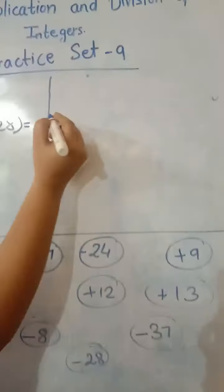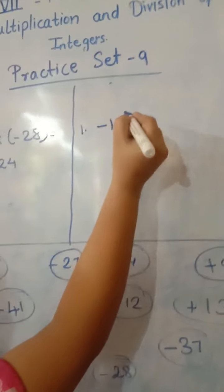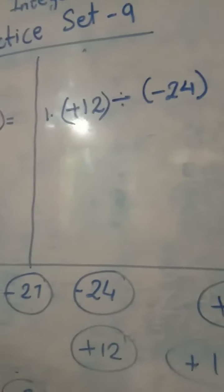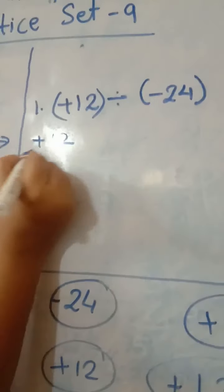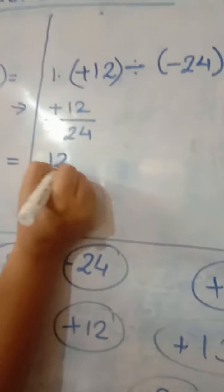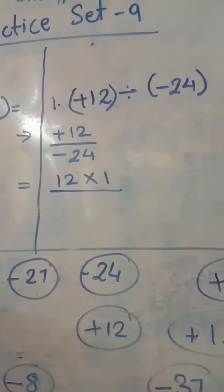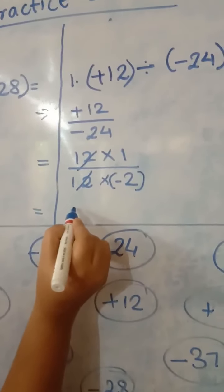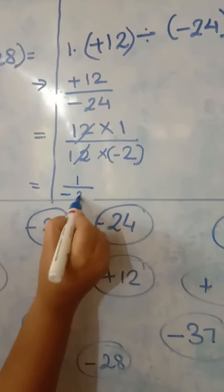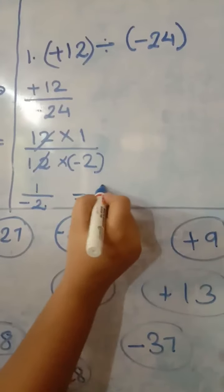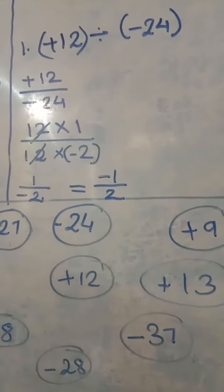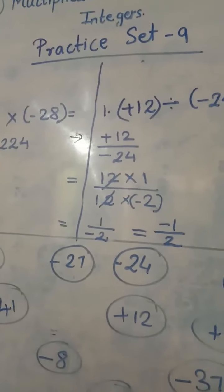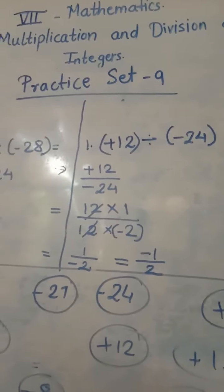Now one division example: positive 12 divided by negative 24. Write it as positive 12 upon negative 24. The common factor is 12: 12 ones are 12, and 12 twos are 24 — giving 1 upon 2. Give the negative sign to the numerator since we can't keep a negative sign in the denominator. So the answer is negative 1 upon 2. You have to solve the remaining 3 pairs for multiplication and 3 more for division to complete Practice Set 9. Thank you.